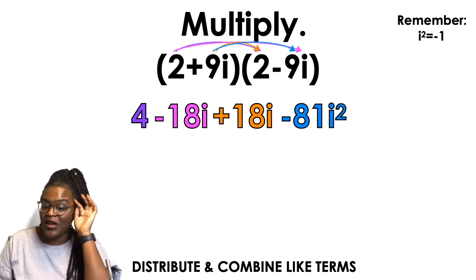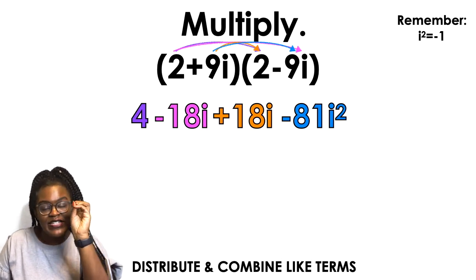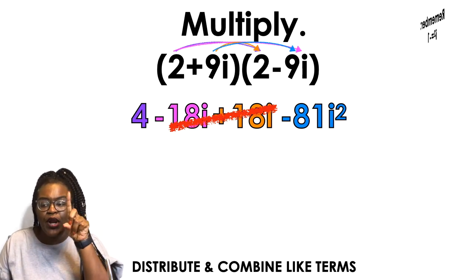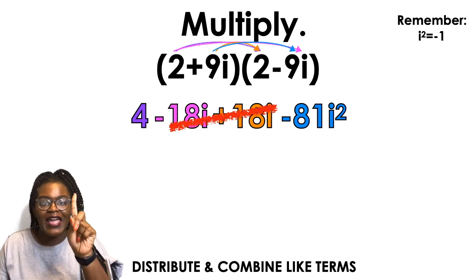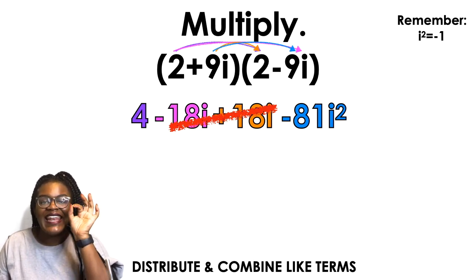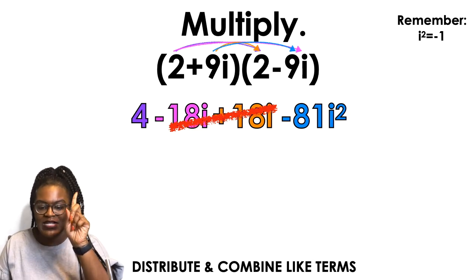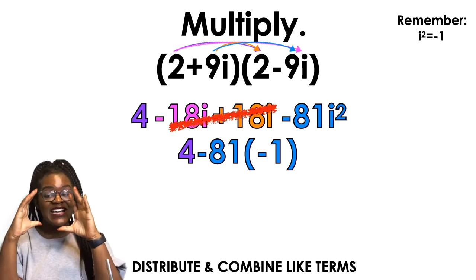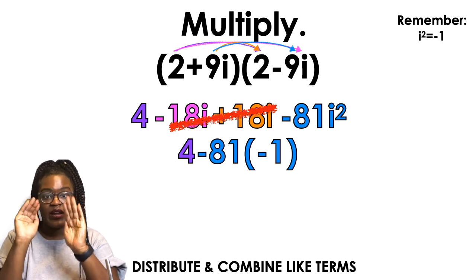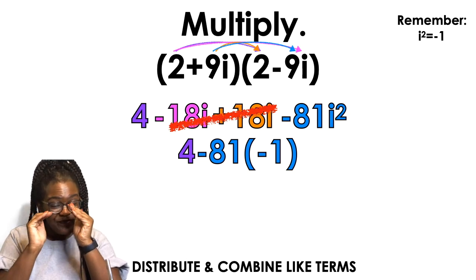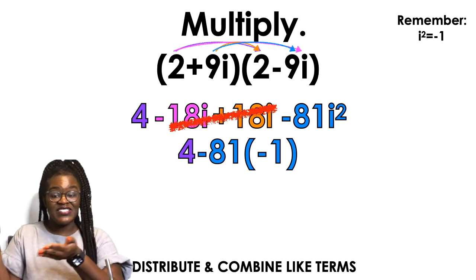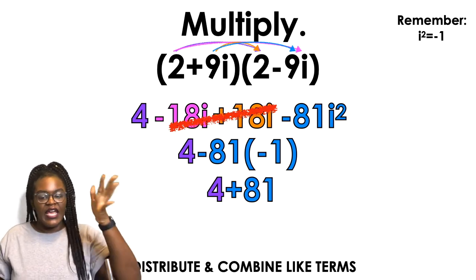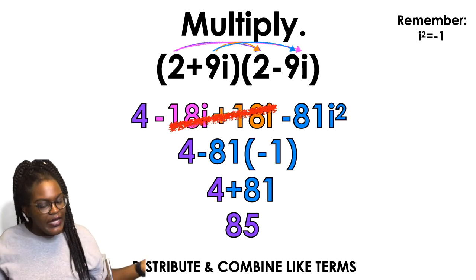Pay attention. All right. So obviously in the middle, I have a negative 18i and a positive 18i. What's going to happen? Get it out of there. Okay. And then what do we need to remember? I need to remember that i squared equals negative 1. Okay. What does that mean for me? Well, that means that I have my 4 minus 81 parentheses, but i squared equals what? Negative 1. So instead of i squared, I have replaced i squared with a negative 1. But now I have a negative 81 next to a negative 1. Well, negative 81 times negative 1 is going to give me positive 81. And now I have a 4 plus 81. So now I got a 85. Boom.